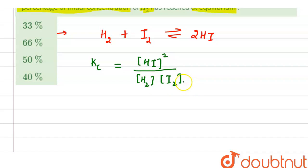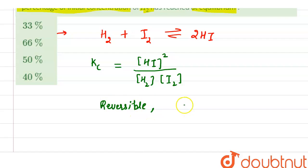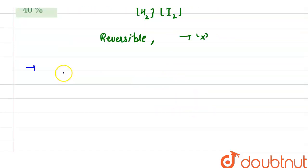Now we will determine the concentration of reactants and products. Both reactants are present in equimolar concentration, so we assume one mole of each reactant is present. Since the reaction is reversible, at equilibrium only a fraction x of the total concentration of reactant will have been converted into product.